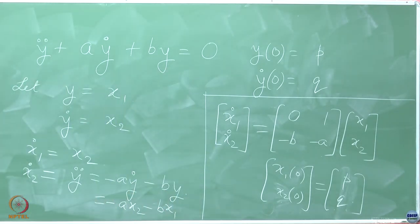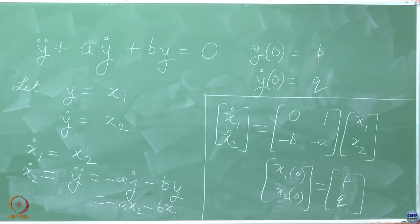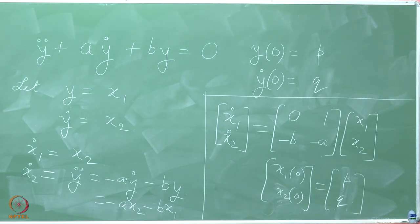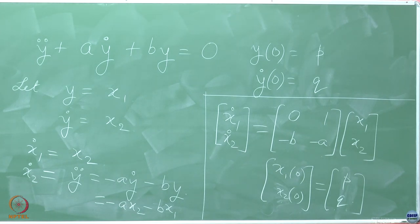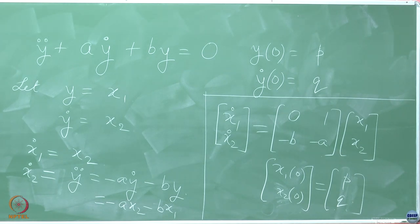The solution of a single decoupled first order equation is very simple. For example, x dot plus a x equals 0 with x(0) equal to alpha gives x(t) equal to alpha e to the minus a t. You can verify this by writing dx/dt equals minus a x, so dx/x equals minus a dt, giving the natural log of x equals minus a t plus C, which upon applying the initial condition yields x(t) equal to alpha e to the minus a t.